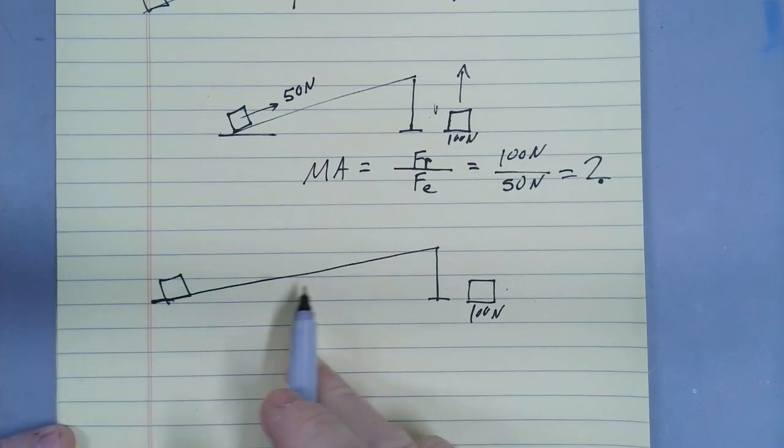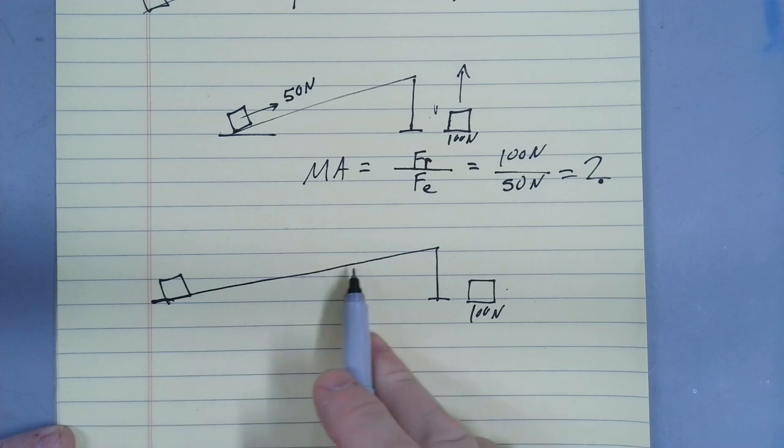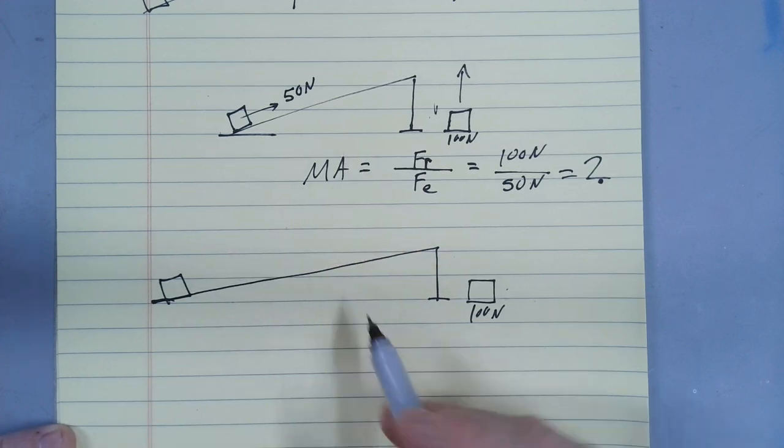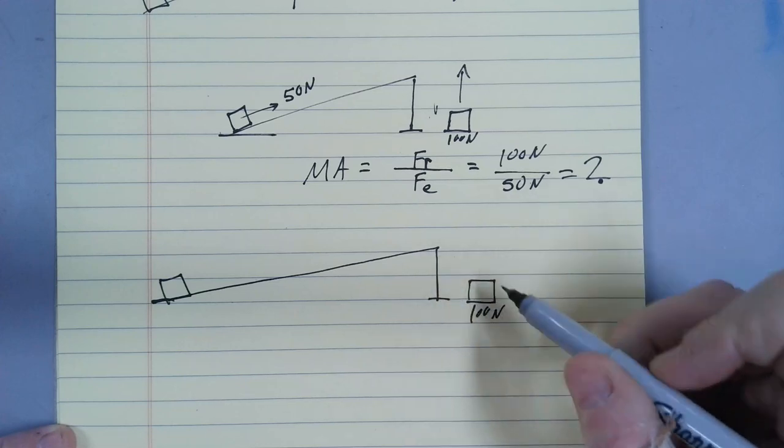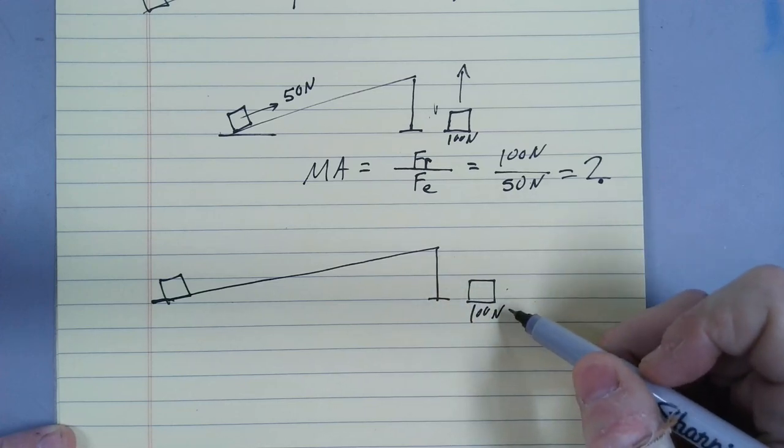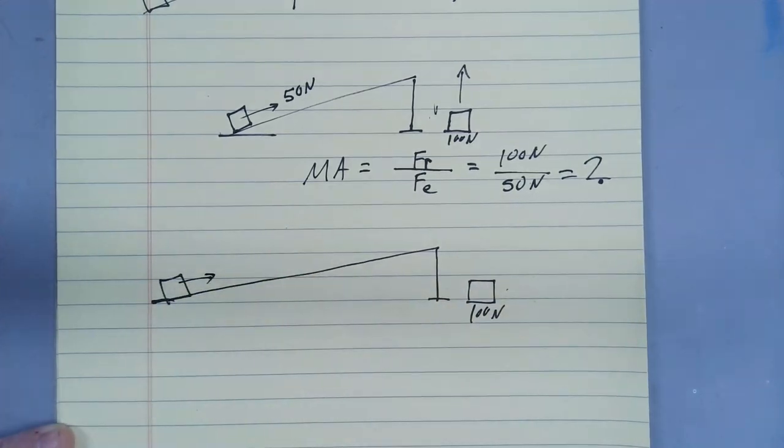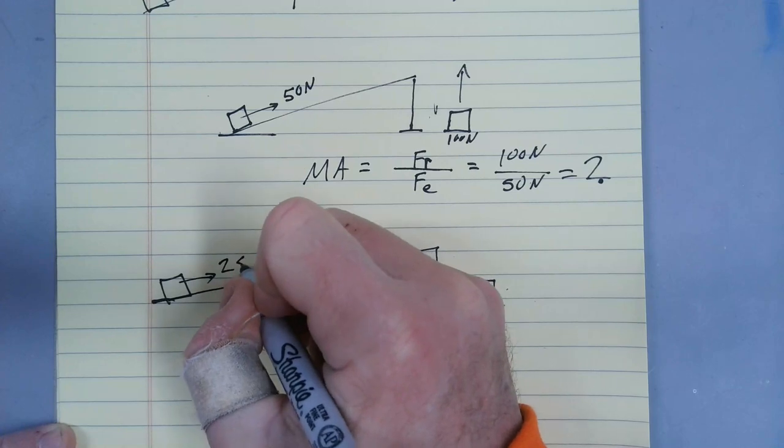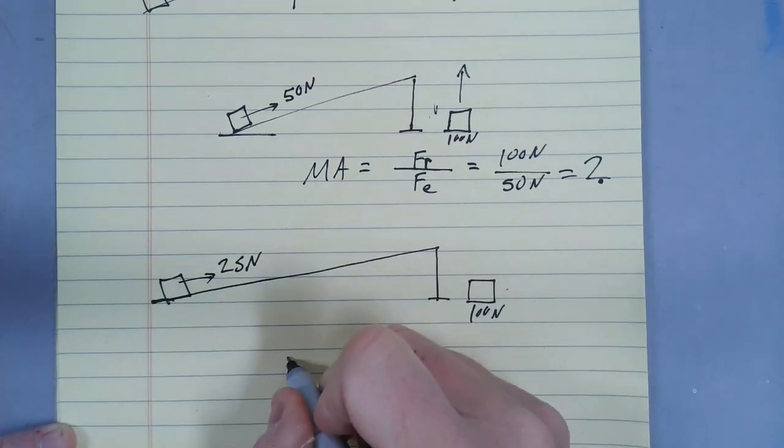But now let's consider this ramp. This ramp is going to be easier to use because it's not nearly as steep as this one. Now, I've got to go a longer distance, but in the end, the same job is accomplished. It's still a 100-Newton box. We can imagine that here, I'm not going to have to use as much force pushing that block up the ramp. Let's pick a number. Let's say 25 Newtons.